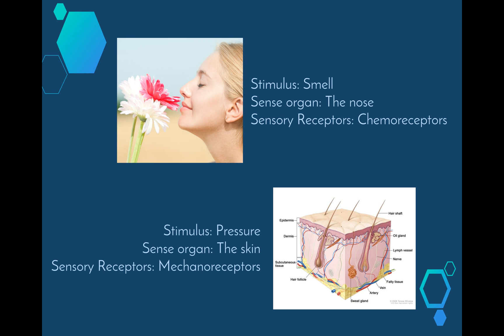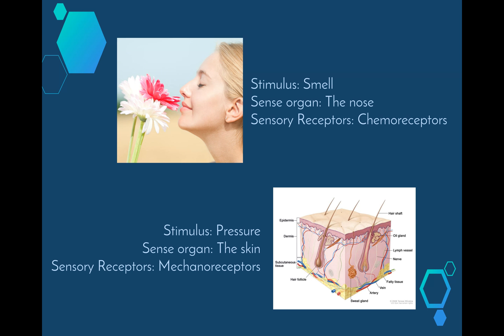The last type of stimulus is pressure, and the sense organ that detects this is our skin. The sensory receptors again are mechanoreceptors, but this time they do a slightly different job — they detect pressure. Whenever our skin is touched in any way, the mechanoreceptors detect it and send the message to the brain.